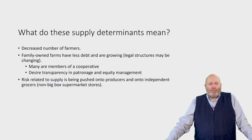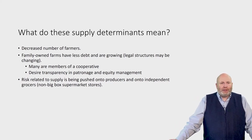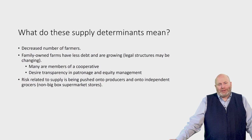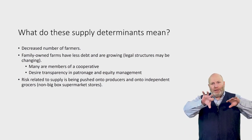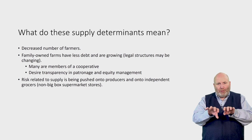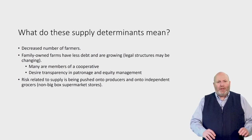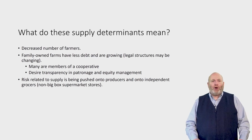What do all these supply determinants mean for someone operating in an agriculture business or food value chain? We have a decreased number of farmers, but they're growing in size, so the net impact on the supply curve is unclear. As food price inflation changes, price risk related to supply is being pushed further back into the value chain — toward production — and also closer to the consumer side toward grocers. The people in the middle are managing risk through contractual arrangements, integration, and other topics we'll cover this semester.